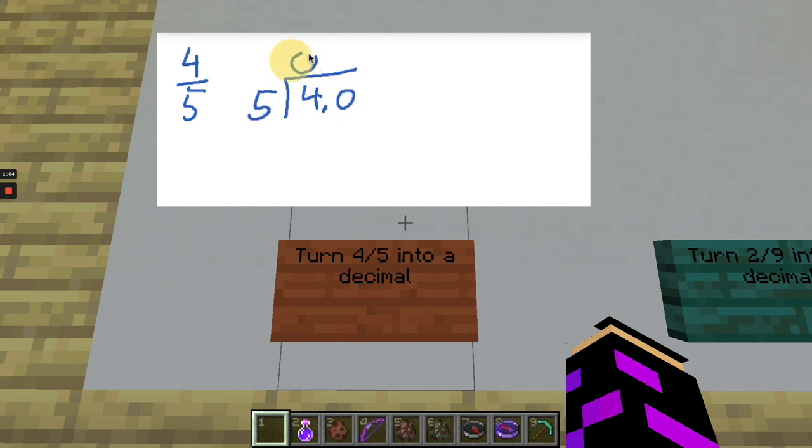So five goes into four zero times. And remember, we bring the decimal straight up. So now how many times does five go into 40? Five goes into 40 eight times. Eight times five is 40 with zero left over. So four-fifths is the same as 0.8.